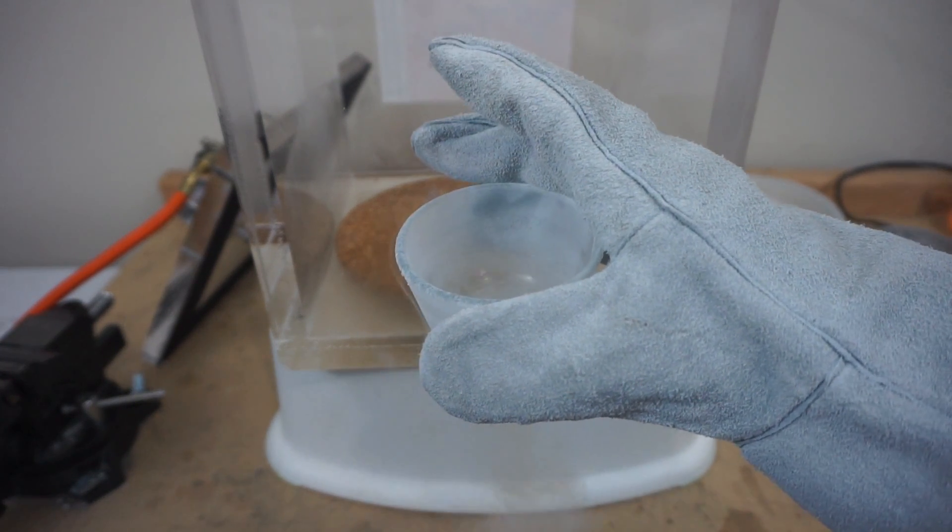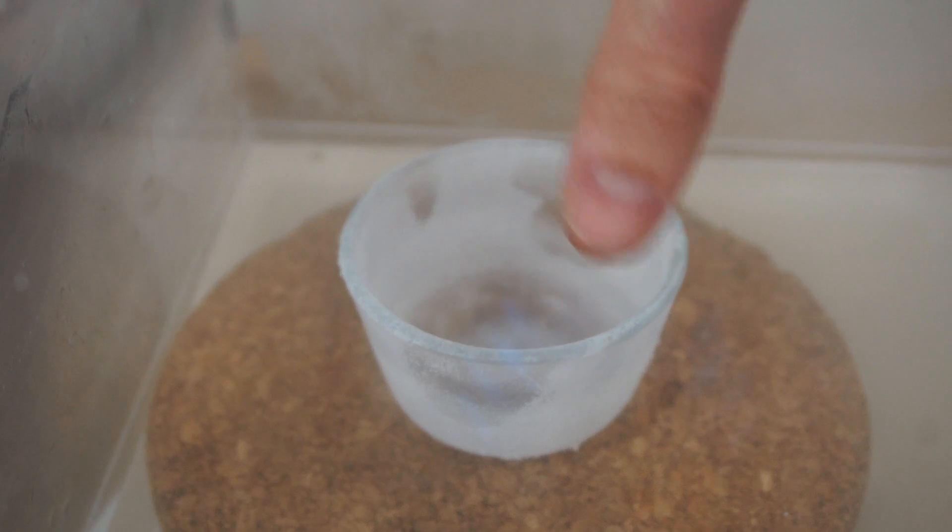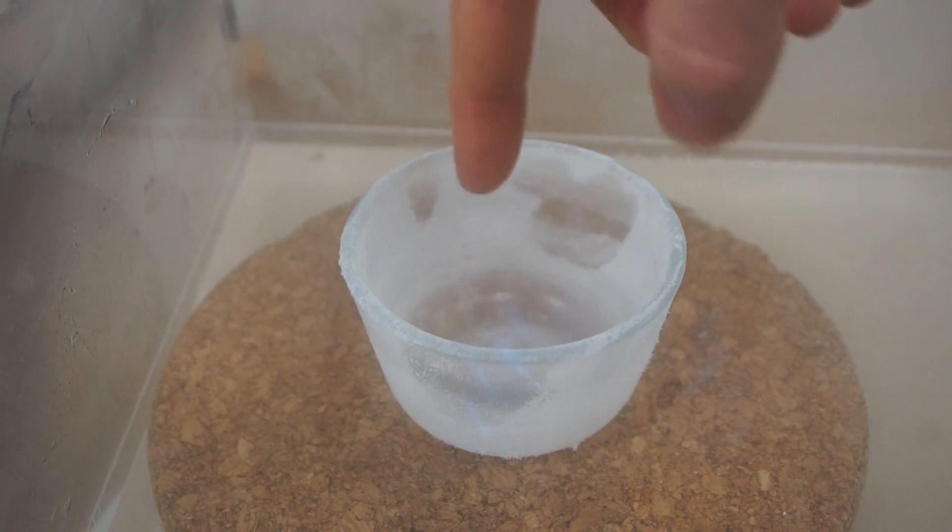So I have some liquid nitrogen in this bowl here. What's going to happen is I'm going to put the liquid nitrogen in the vacuum chamber, reduce the pressure, and that's going to continually boil the liquid nitrogen. It's going to boil more rapidly than it would at normal pressure. The reason is because it's at a lower atmospheric pressure, so it will boil at a lower temperature.